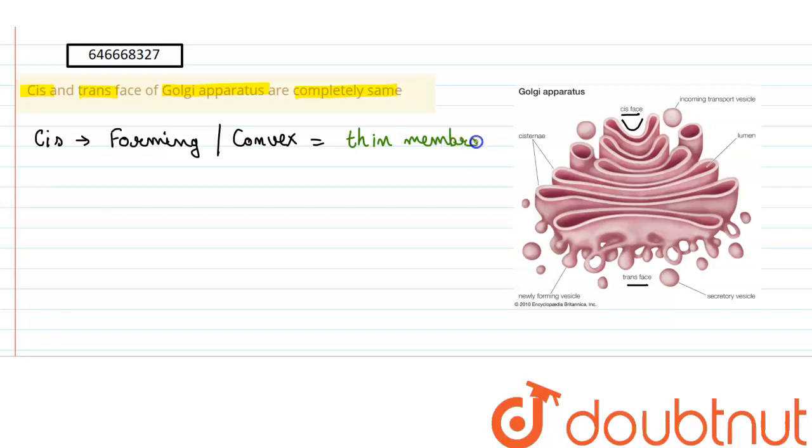This phase is responsible for the entry of the proteins and lipids which enter the Golgi apparatus for modification and packaging. The proteins and lipids which are synthesized by the endoplasmic reticulum enter through the cis phase.